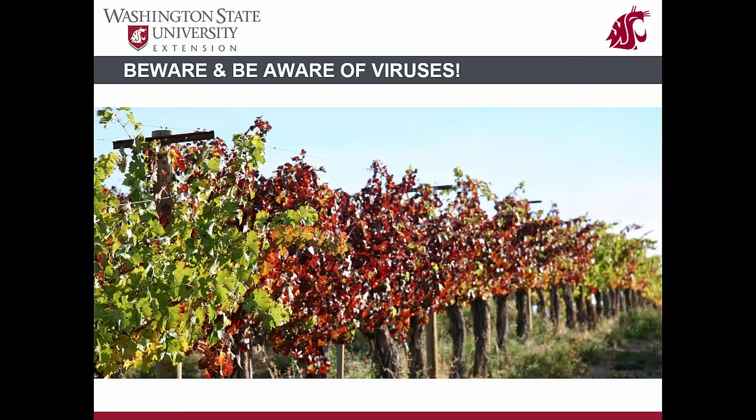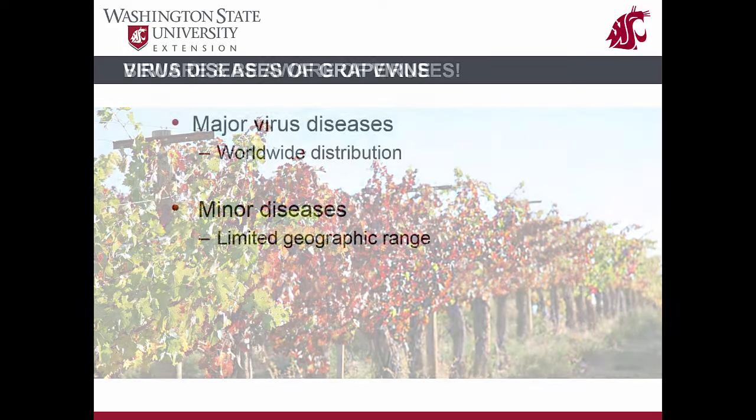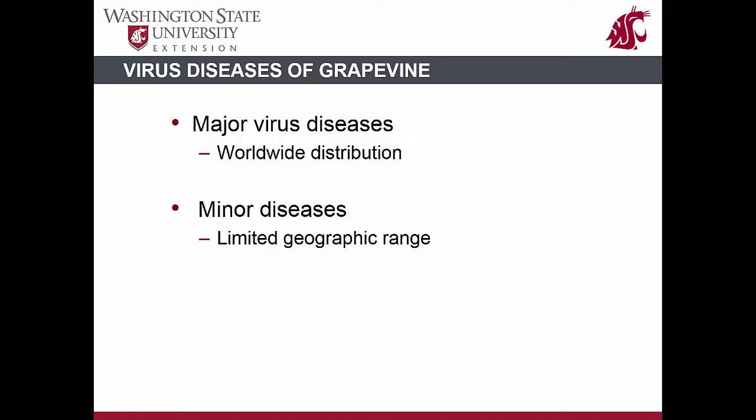Increased awareness about viruses and how they affect vineyard health, yield, and fruit quality will help efforts to maintain healthy vineyards in Washington State. Fortunately, not all 60-plus viruses are economically important — only a few are of great economic significance due to their worldwide distribution. These are classified as major virus diseases. A second group of viruses is of limited significance, documented in only a few geographic regions and causing minor disease problems in wine grapes.